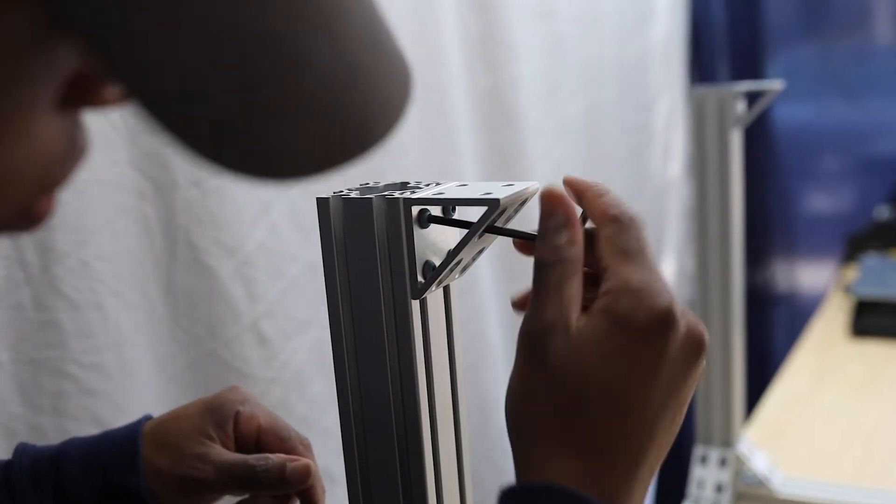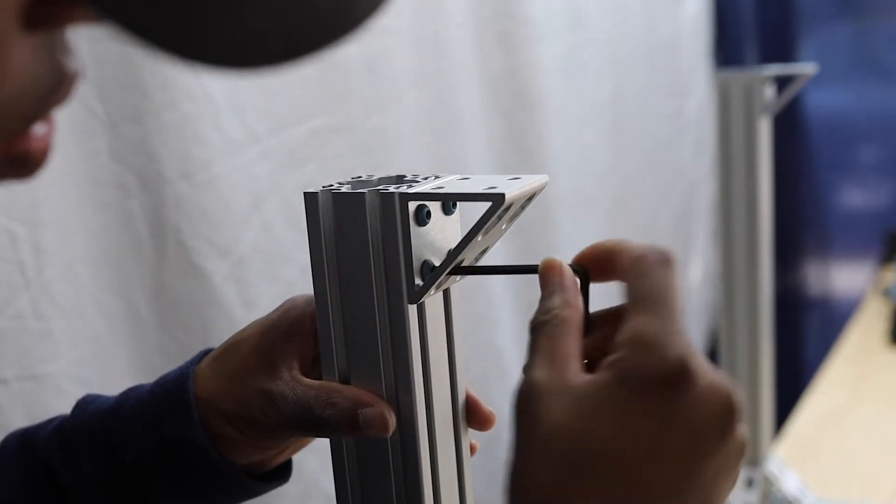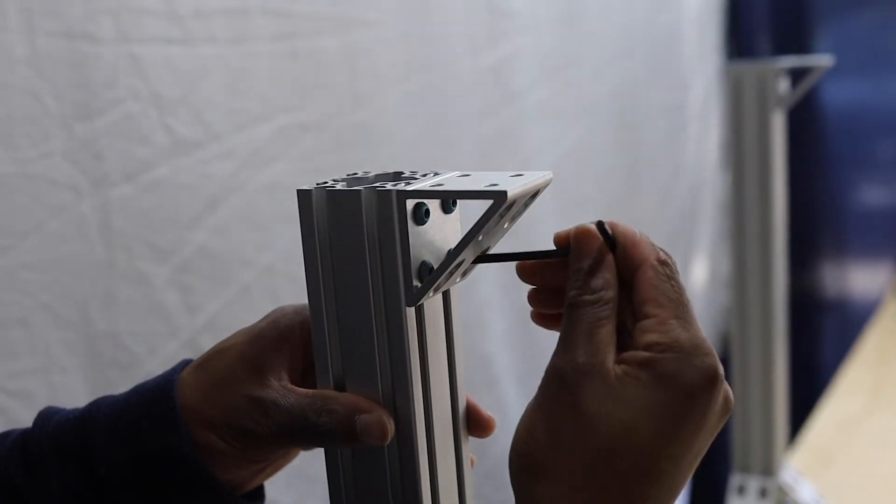The top portion is made mostly of 50 by 100 aluminum extrusion, and this basically just gave me room for components like ball screws and linear rails.